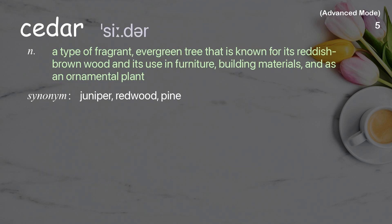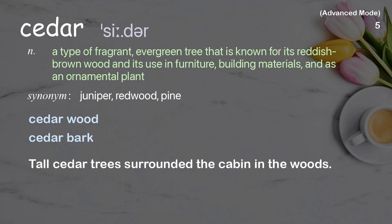Cedar. A type of fragrant, evergreen tree that is known for its reddish-brown wood and its use in furniture, building materials, and as an ornamental plant. Examples: cedar wood, cedar bark. Tall cedar trees surrounded the cabin in the woods.